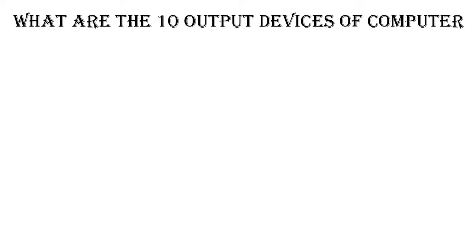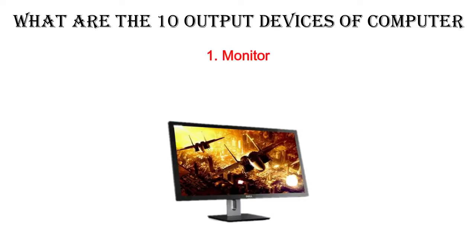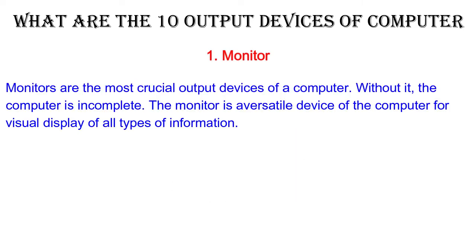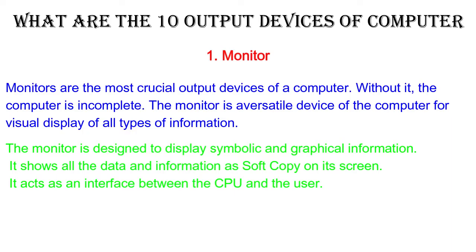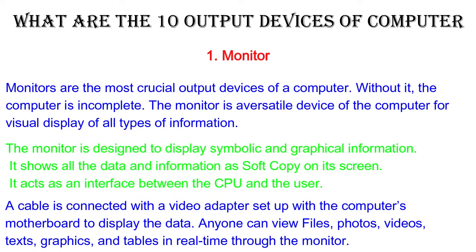1. Monitor. Monitors are the most crucial output devices of a computer. Without it, the computer is incomplete. The monitor is a versatile device for visual display of all types of information, designed to display symbolic and graphical information. It shows all data and information as a soft copy on its screen and acts as an interface between the CPU and user. A cable is connected with a video adapter set up with the computer's motherboard to display the data.